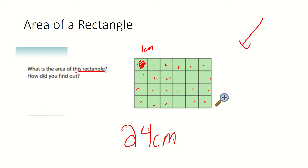So here my area is 24 centimeters. And because it's a square, we're going to put a squared here. What that basically means is that each centimeter is a square, and we have 24 here.